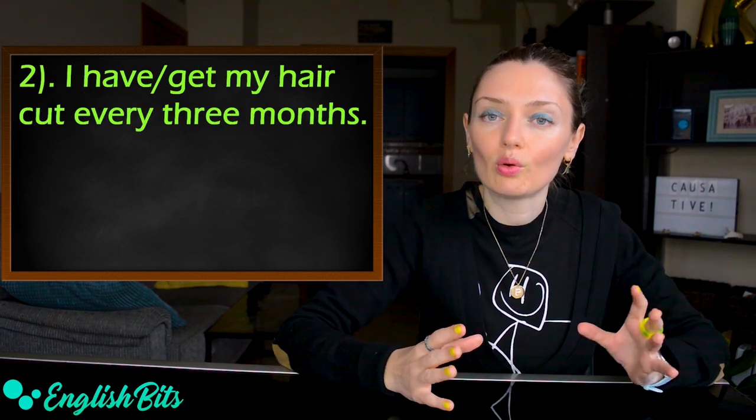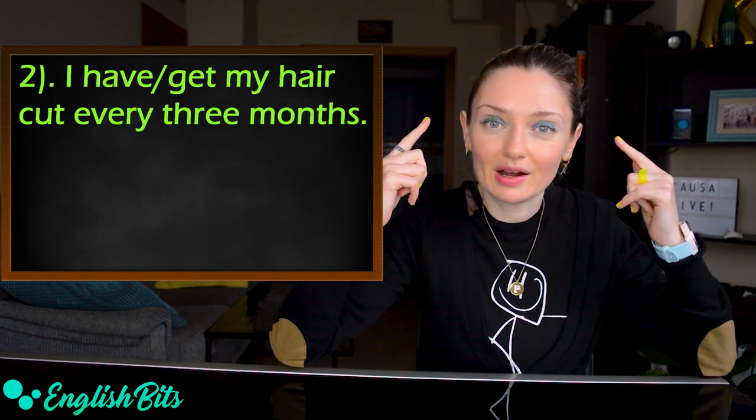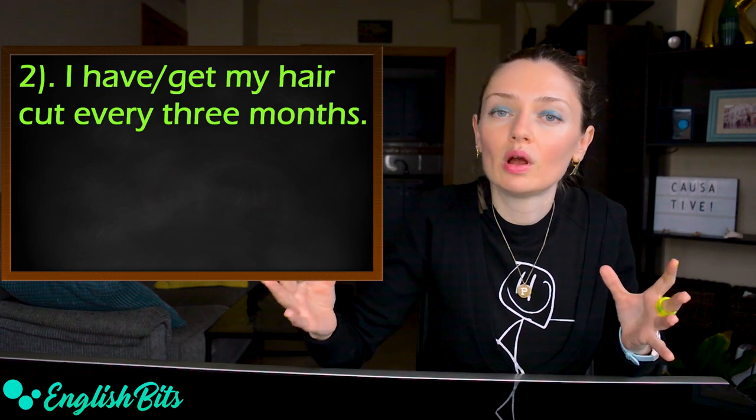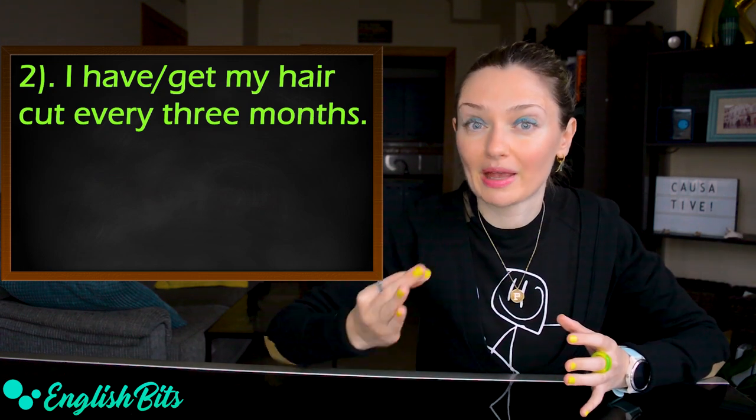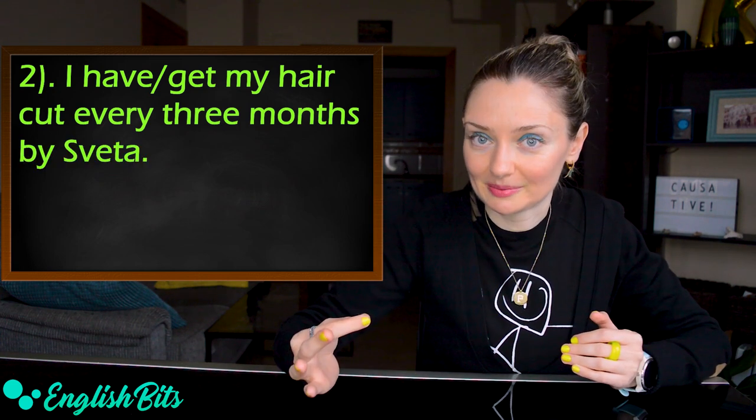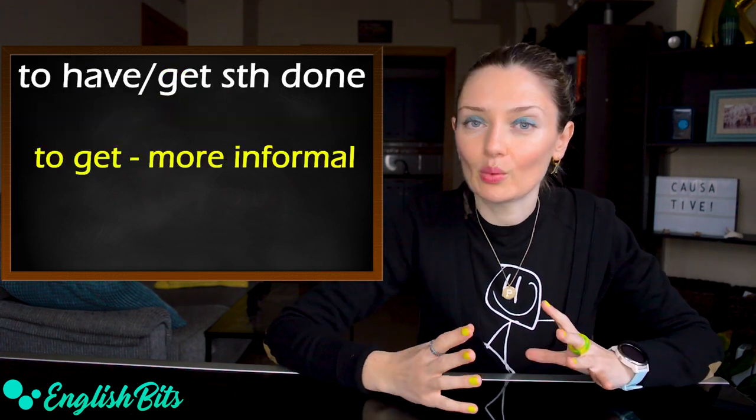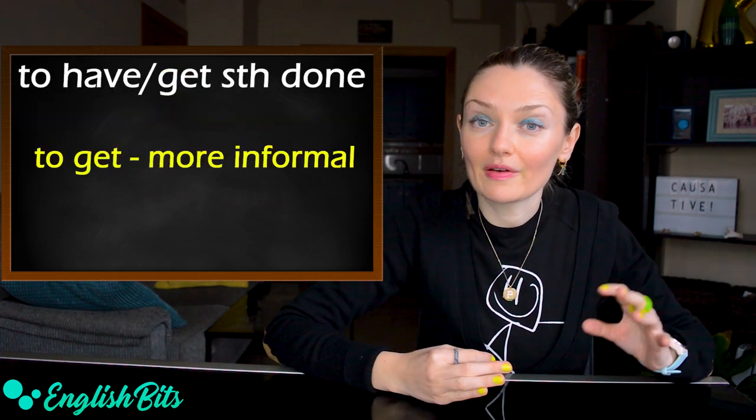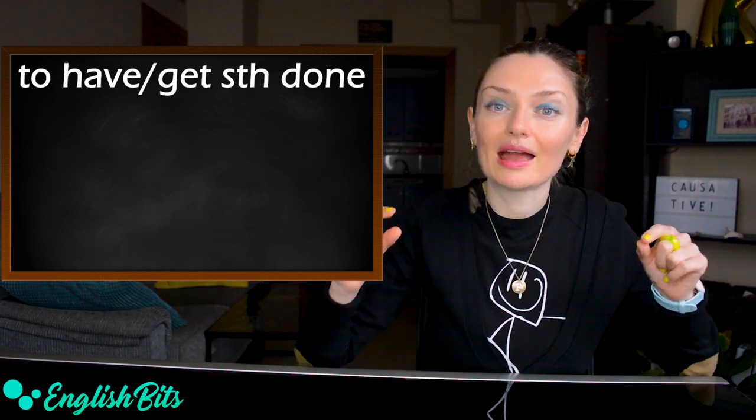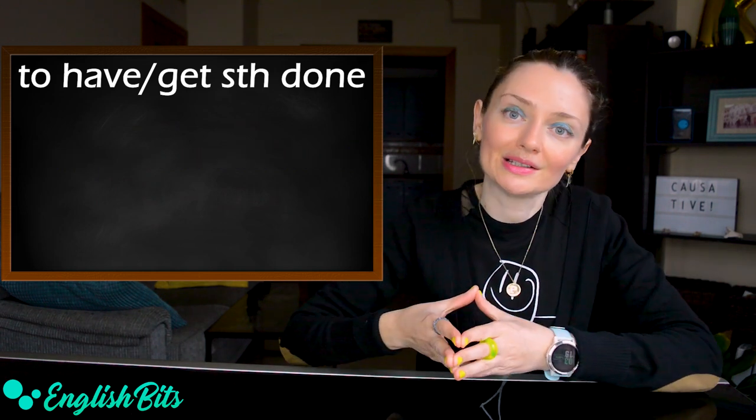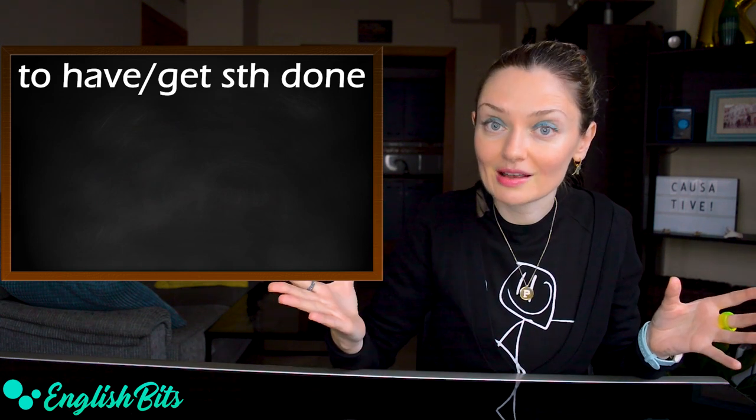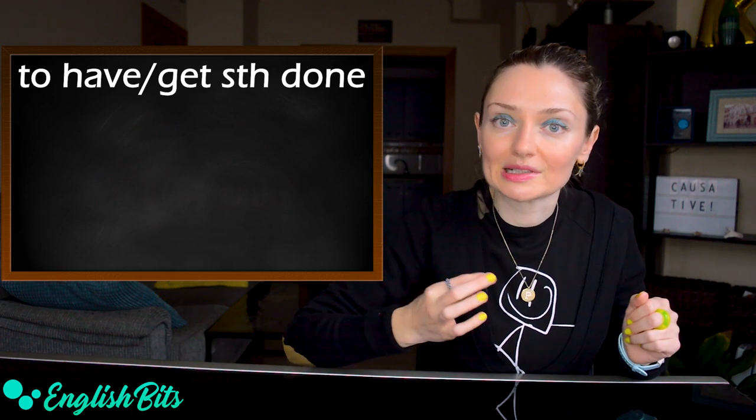And one more example. I have or I get my hair cut every three months. And if I want, I can say who performs the action. Who cuts my hair? I can say I have or I get my hair cut by Света. Света is my hairdresser. We can use both to have and to get, but to get is more informal than the verb to have. And one more thing that we have to bear in mind is that we need to conjugate the verbs to have and to get and to use them in the correct grammar tense.